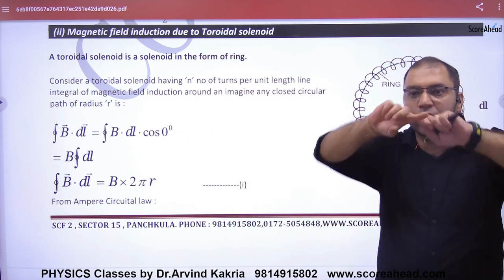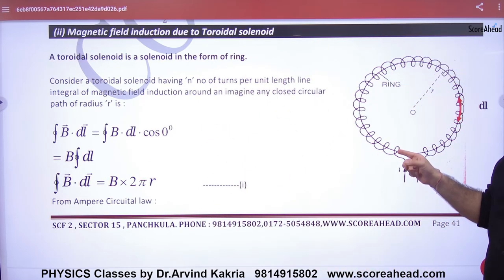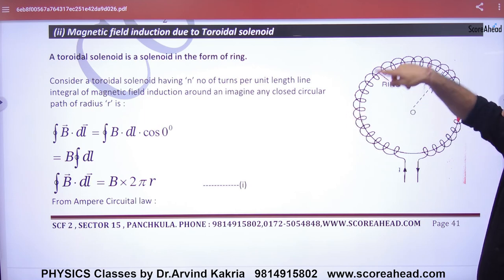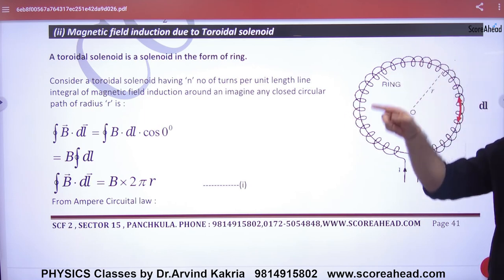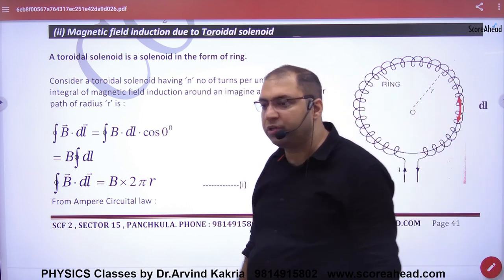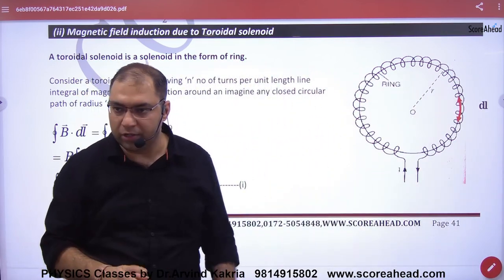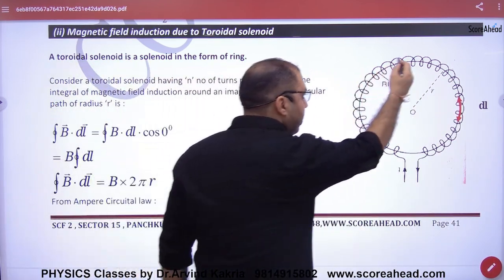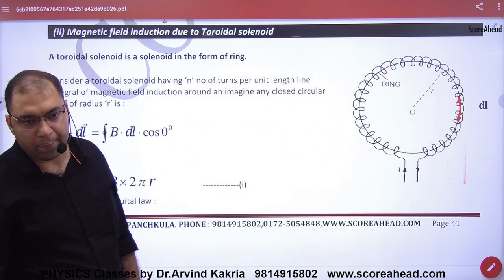If you wind the wire in a circular ring, this is called toroid or toroidal solenoid. So the question is what will the magnetic field be along the axis?